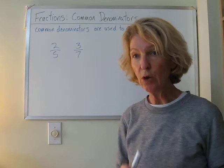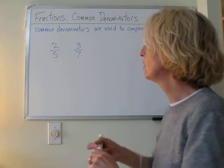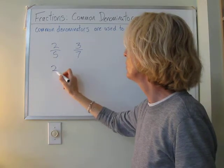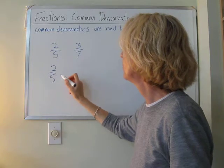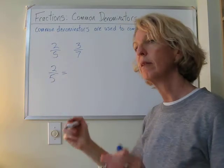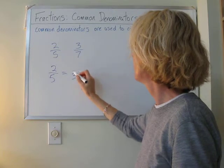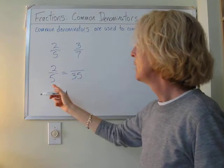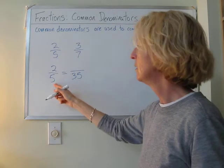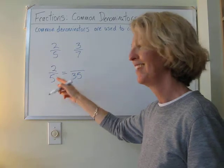Now, we already talked about equivalent fractions, so we're going to rewrite 2 fifths as an equivalent fraction with a denominator of 35. Now, what's the rule? What you do to the bottom, you do to the top. That's right!